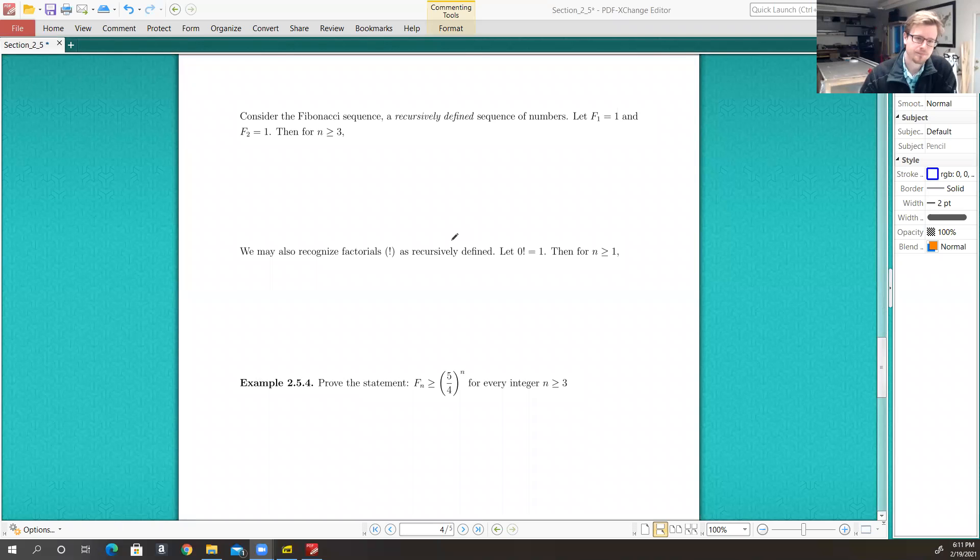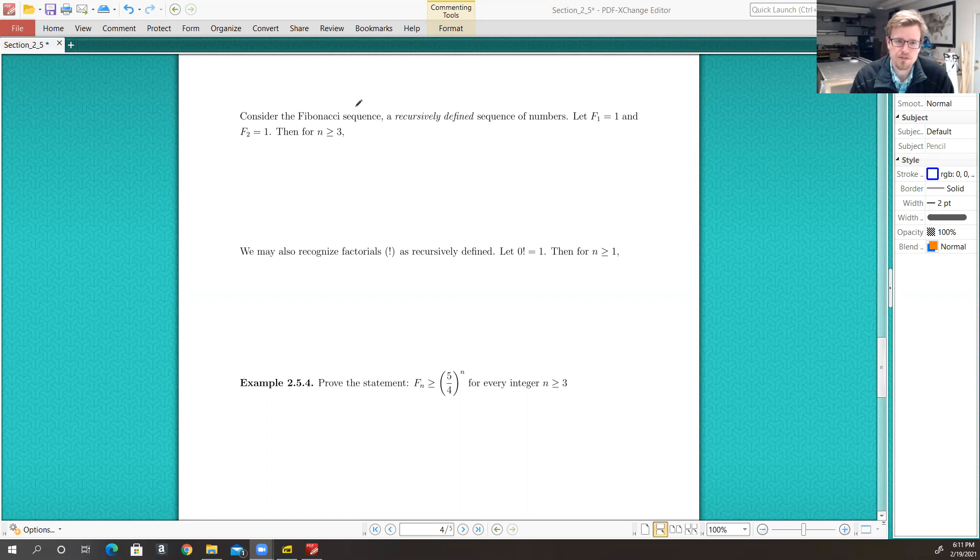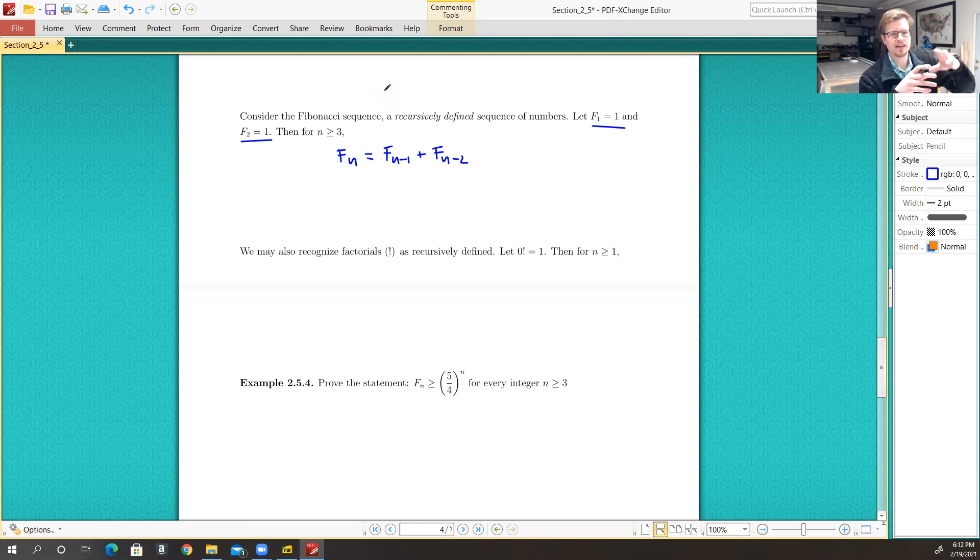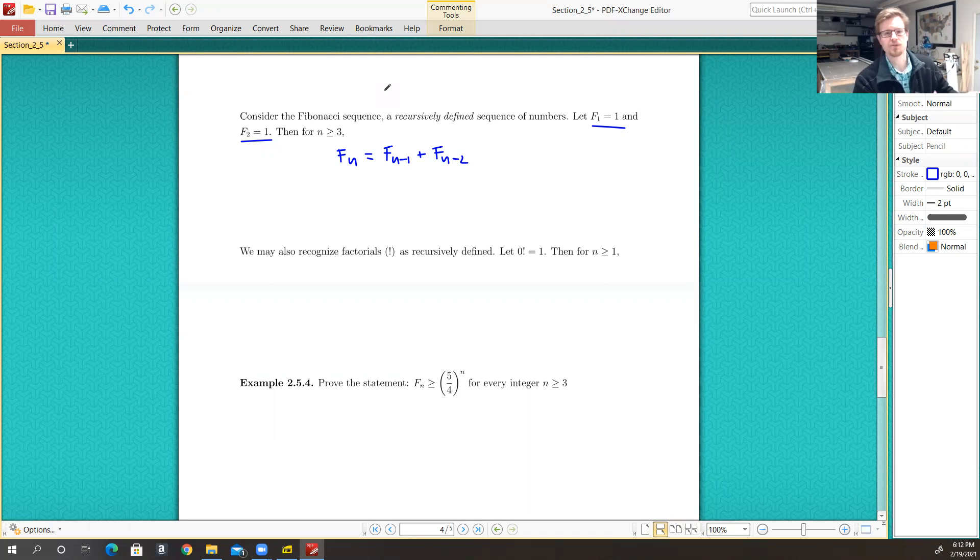So the Fibonacci numbers, or the Fibonacci sequence, is a recursively defined sequence of numbers. If we let the first Fibonacci number be 1, the second Fibonacci number be 1 as well, then for n greater than or equal to 3, we have that F sub n is equal to F sub n minus 1 plus F sub n minus 2. So it's just each number in the sequence is defined as the sum of the previous two numbers in the sequence.